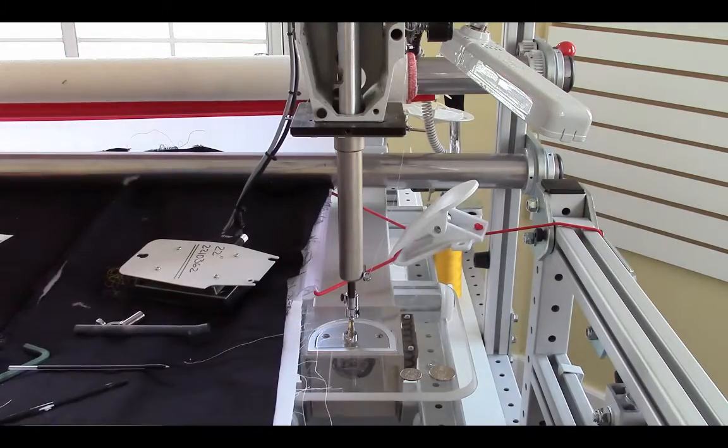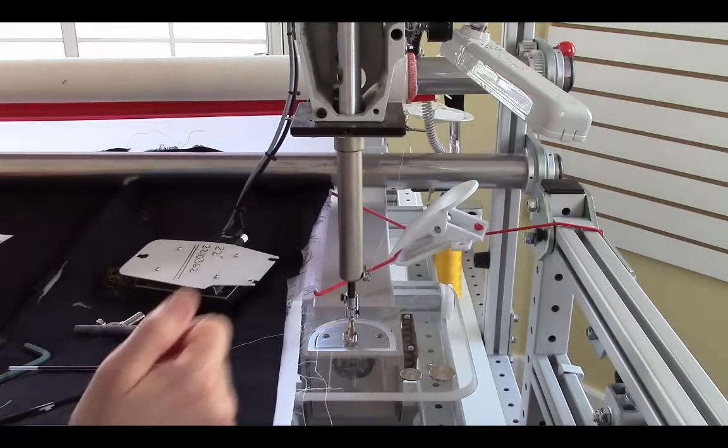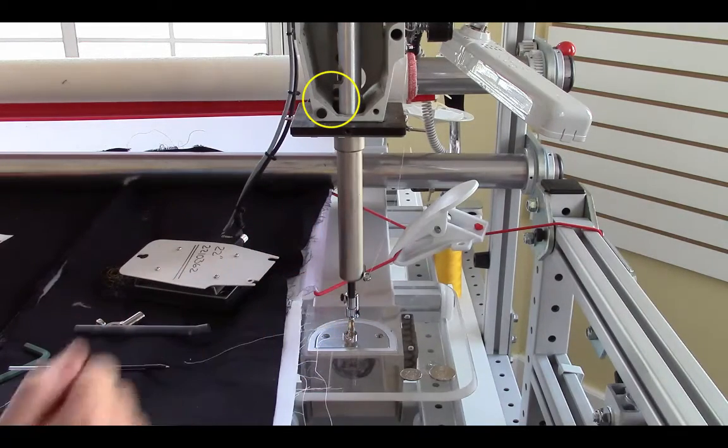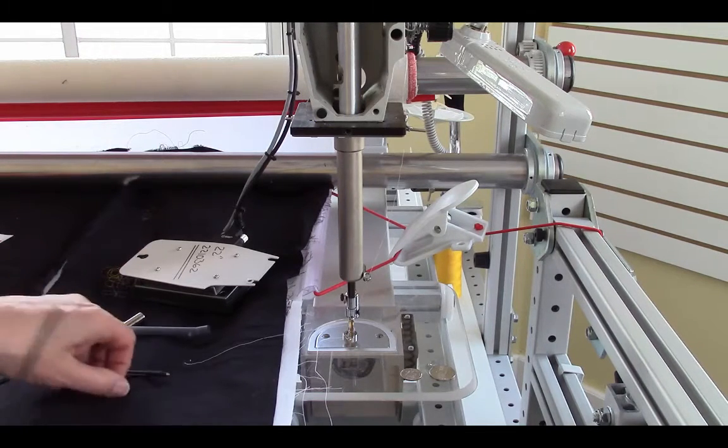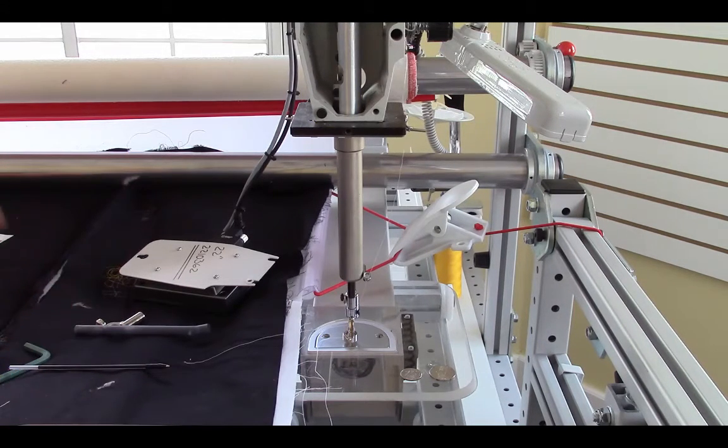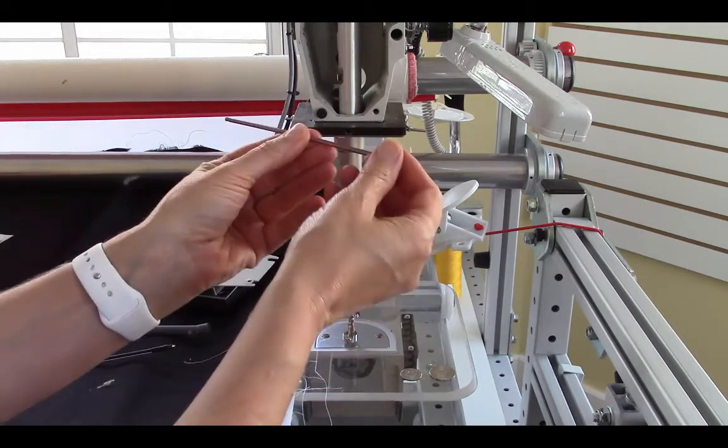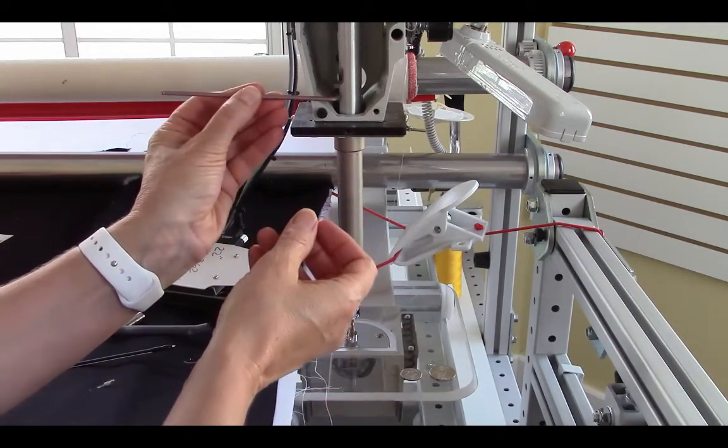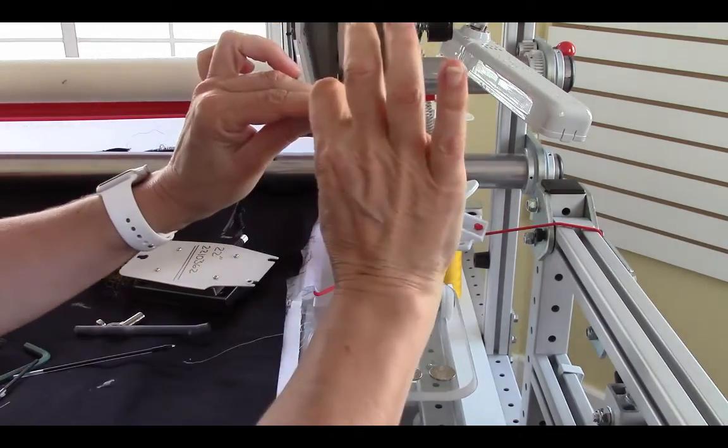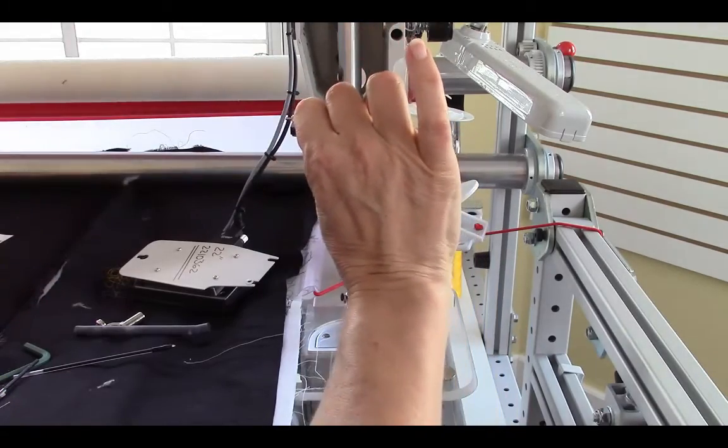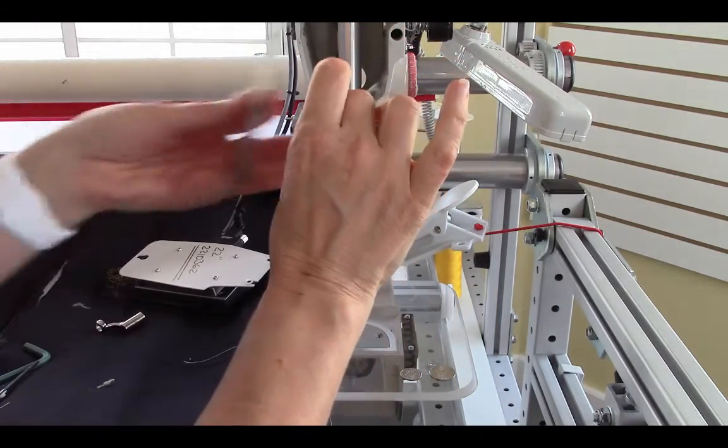Now you can see right here there's an allen screw that is holding the hopping foot bar. And that is tight right now. When it comes from the factory it's super tight. Most of us have allen wrenches like this. When you try to put it in this way it doesn't reach. And when you try to put it in this way you're probably not strong enough to get any torque on that to loosen that screw.